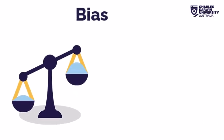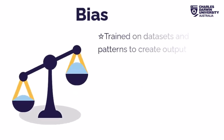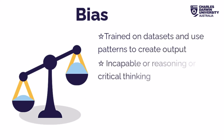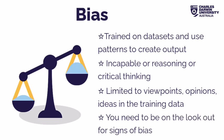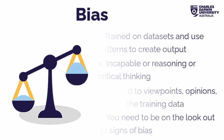Bias is another major ethical concern for Gen AI tools. Tools are trained on data sets, use patterns to generate output, and are incapable of reasoning or critical thinking. This means Gen AI tools are limited to the viewpoints, opinions and ideas contained in the original training data. You need to be aware of the potential for bias and be able to evaluate the output if you want to behave with academic integrity.